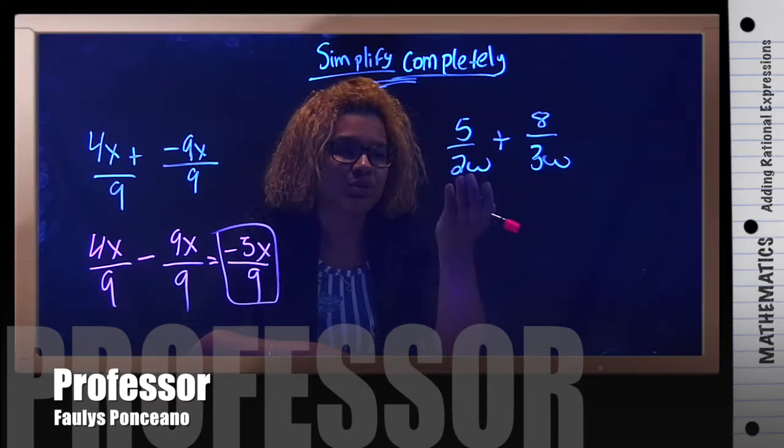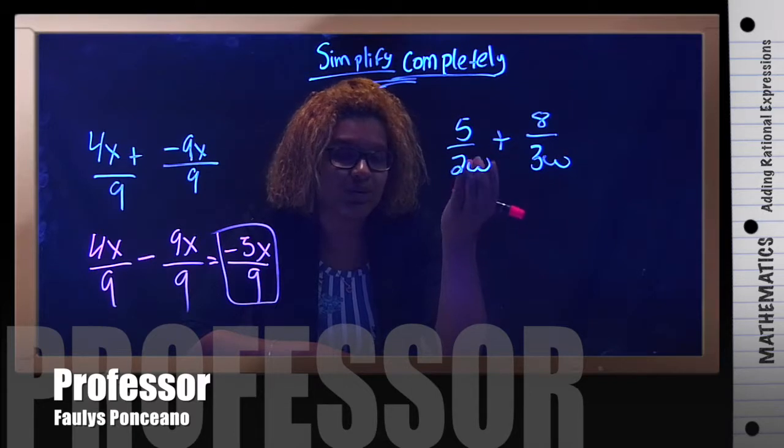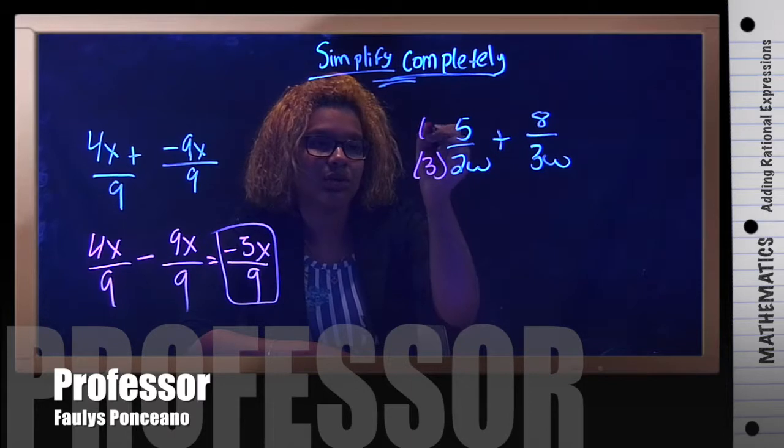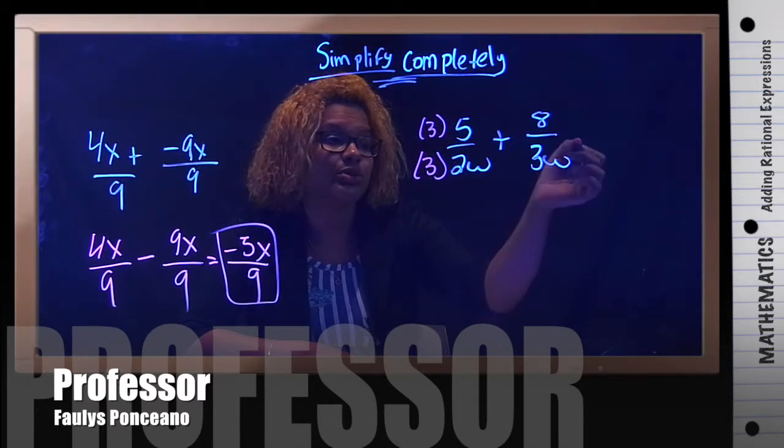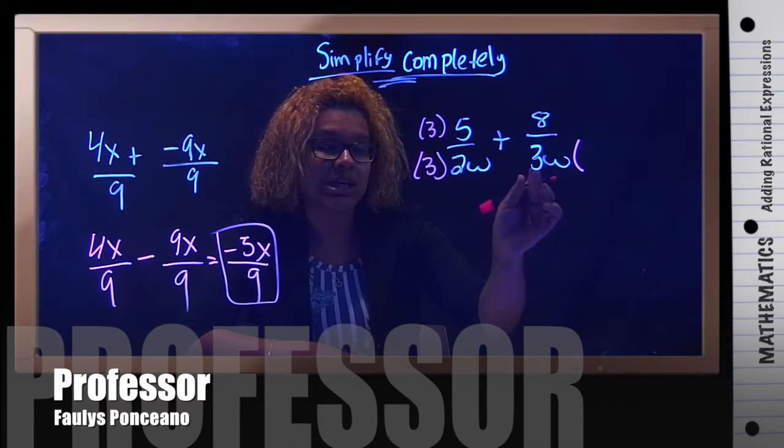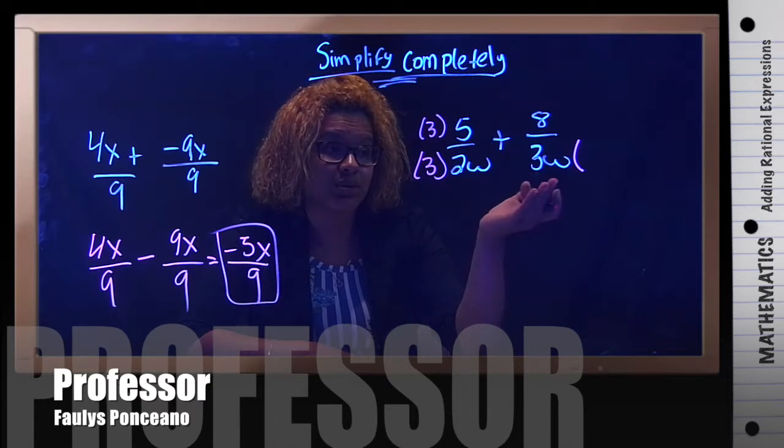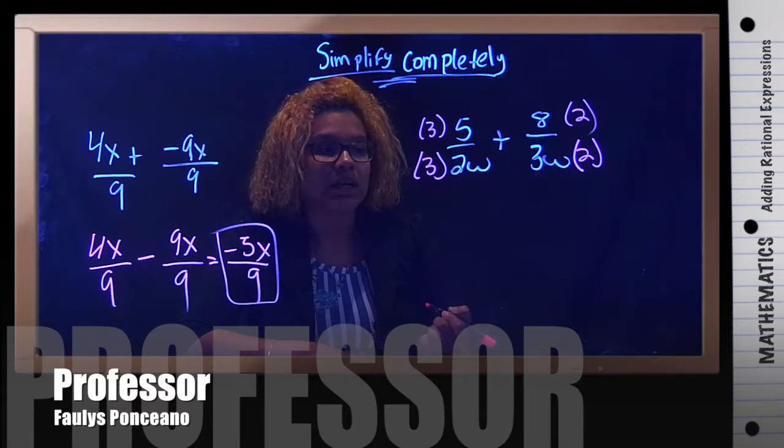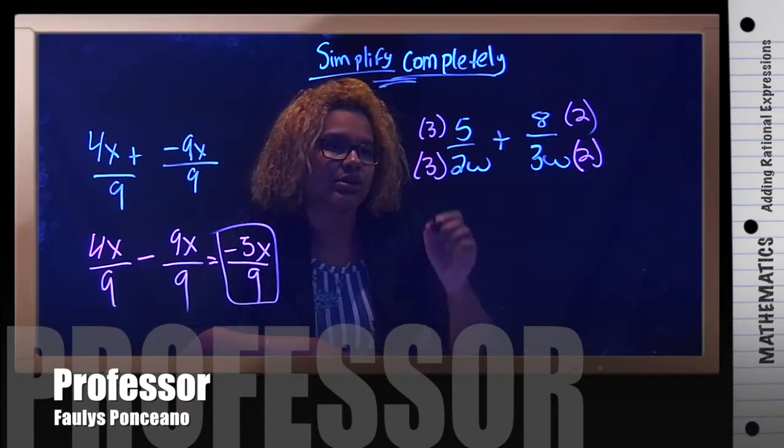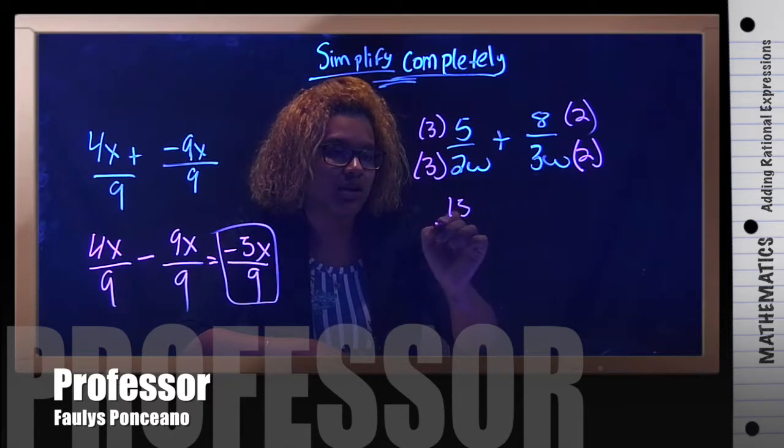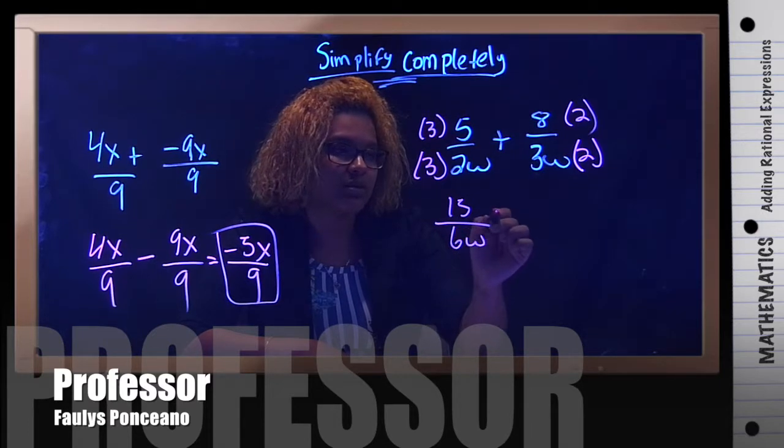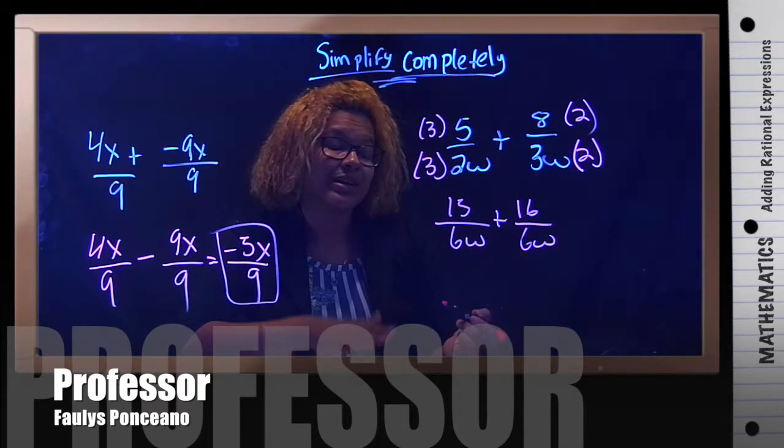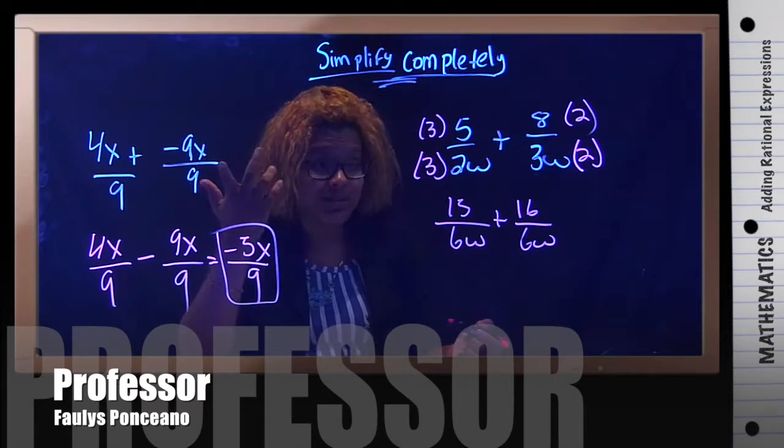So what do I have to multiply this 2w by to get to 6w? Times 3. So whatever you do on the bottom, you must do on the top. Now, we're simply going to multiply. So 3 times 5, 15, over 6w plus 2 times 8 gives you 16, over 6w.